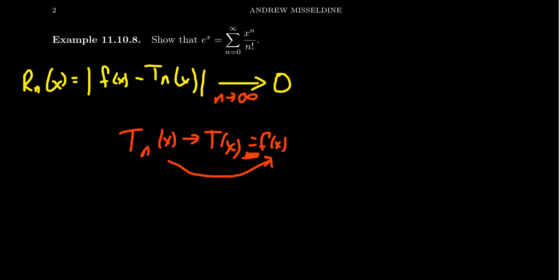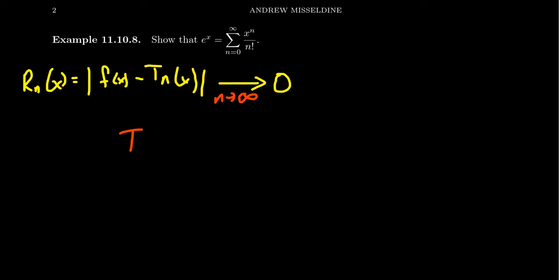A sequence can only have one limit, so if something else is acting like a limit — if it walks like a limit and quacks like a limit — that means it is the limit as well. That will force f of x to equal the Taylor series. Our approach here is to use Taylor's inequality, which we learned about in a previous video.